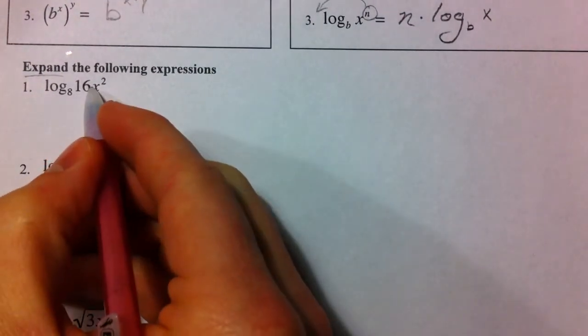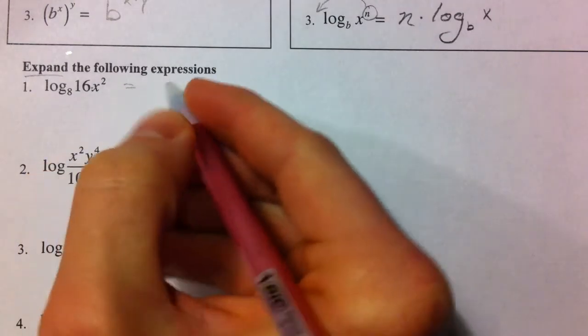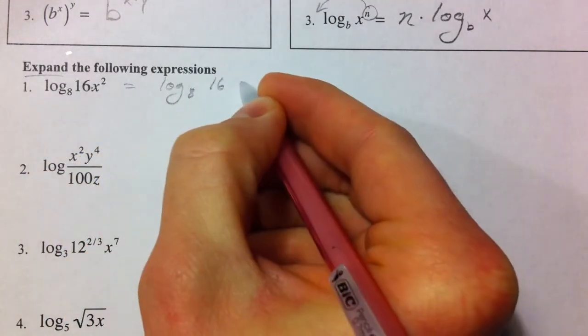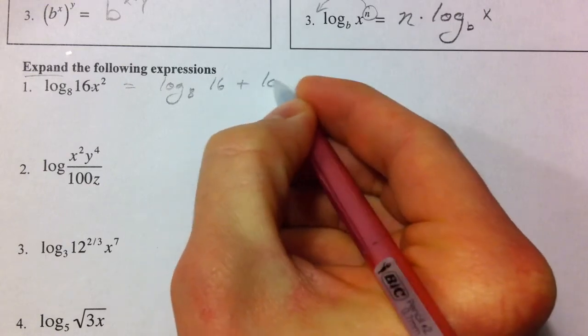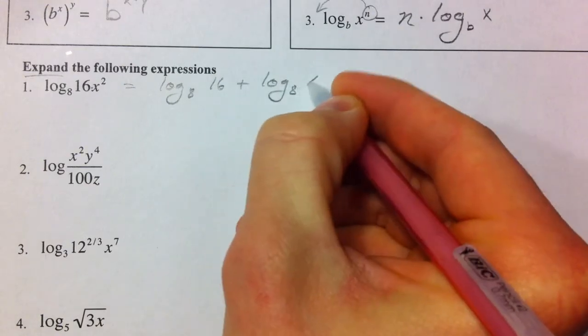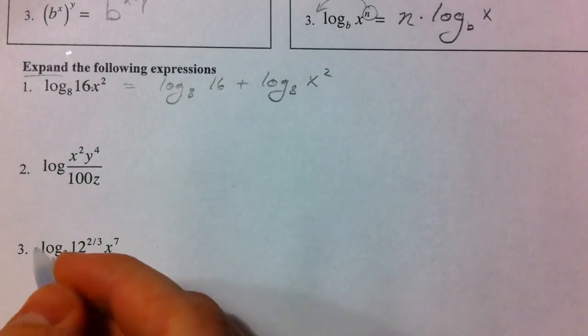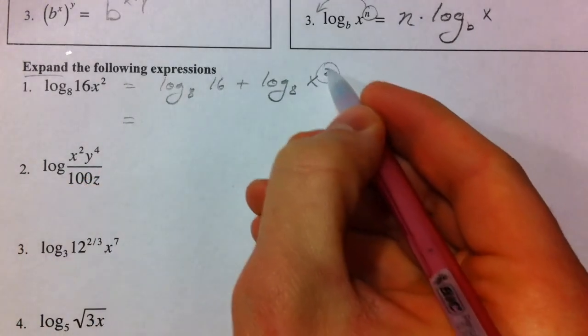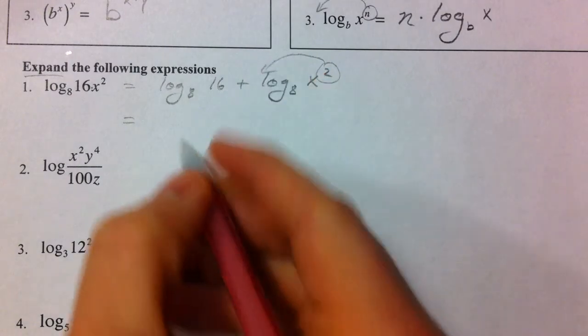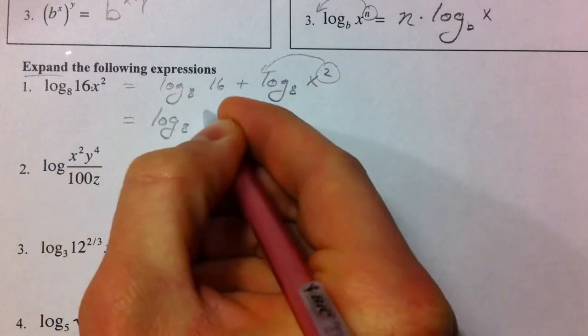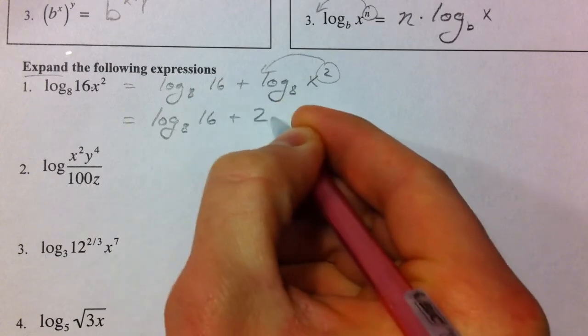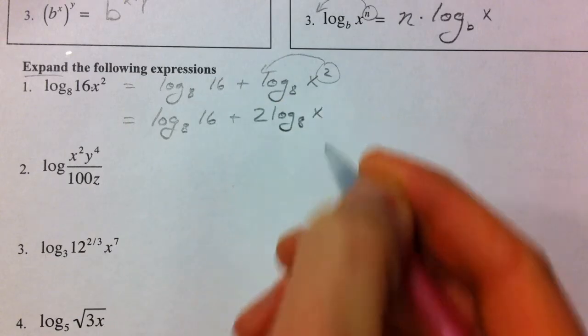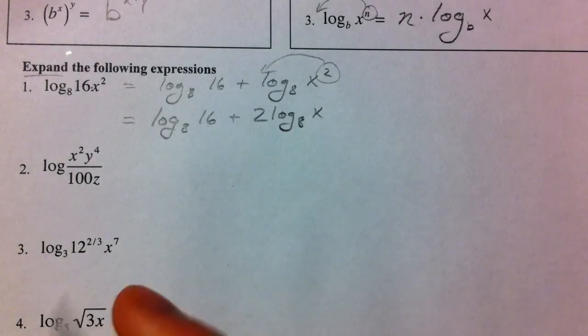So, we've got multiplication here. And so, we're going to have log base 8 of 16 plus log base 8 of x squared. That's our first property. And then, we're going to take it one more step because we've got a power here that we're going to bring down in front. So, this is going to be log base 8 of 16 plus 2 times log base 8 of x.